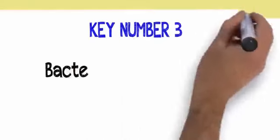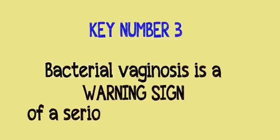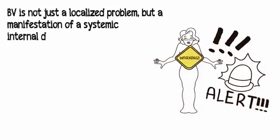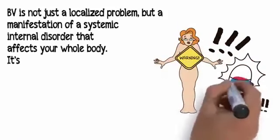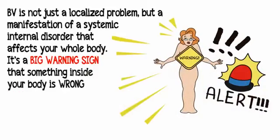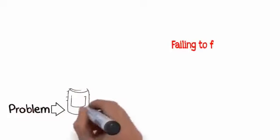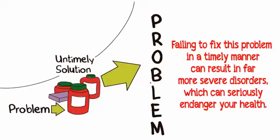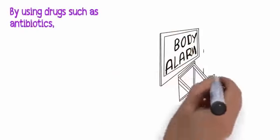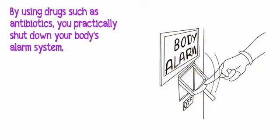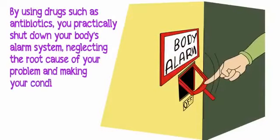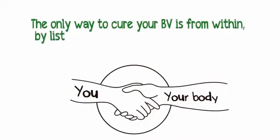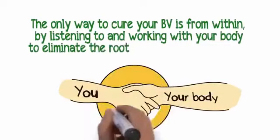Key number three: bacterial vaginosis is a warning sign of a serious inner imbalance. BV is not just a localized problem, but a manifestation of a systemic internal disorder that affects your whole body. It's a big warning sign that something inside your body is wrong and needs to be corrected. By using drugs such as antibiotics, you practically shut down your body's alarm system, neglecting the root cause of your problem and making your condition worse in the long run.